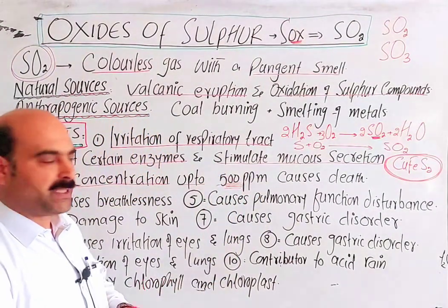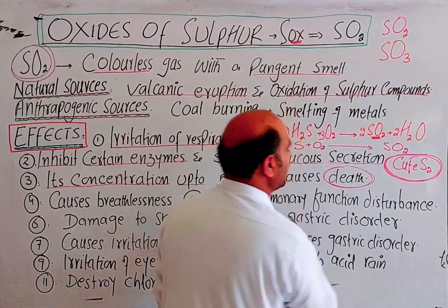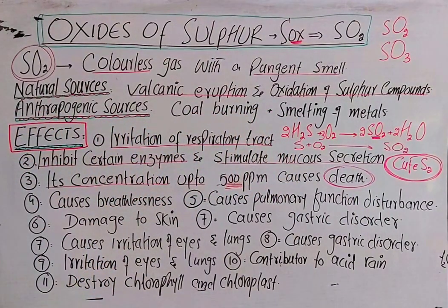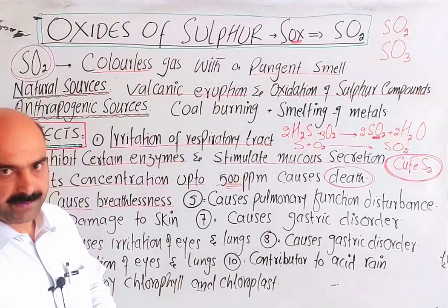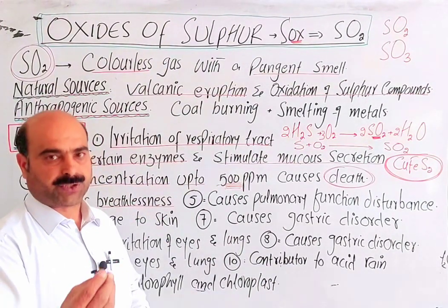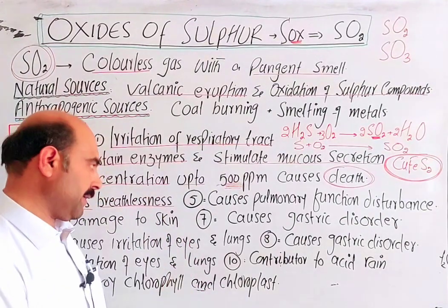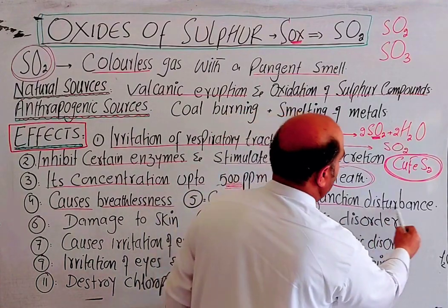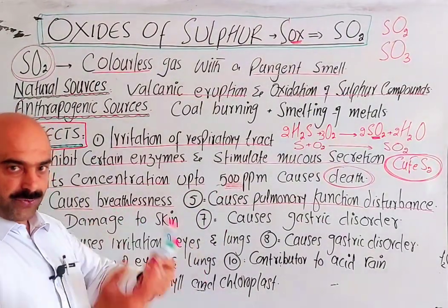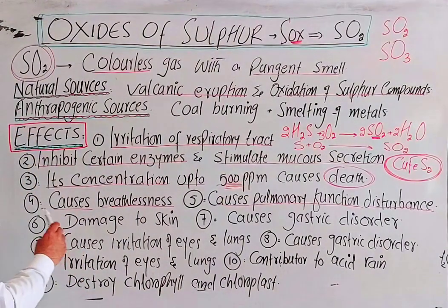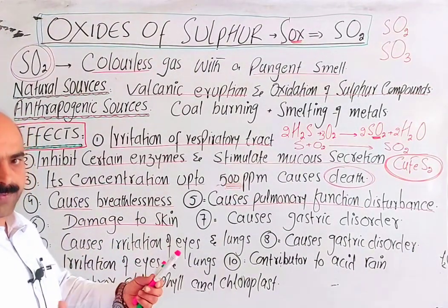At a concentration of 500 ppm (500 parts per million), sulphur dioxide causes fatal inhalation effects — it can cause death. It also causes breathlessness. It causes damage to pulmonary function — the pulmonary veins and pulmonary arteries are destroyed. It also causes damage to the skin.